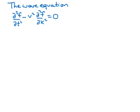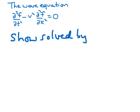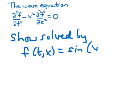The second partial differential equation we'll look at is the wave equation. We have a function f of two variables t and x, and we take the second derivative with respect to t and subtract v² times the second derivative with respect to x, setting that equal to zero. We want to show that this is solved by f(t, x) = sin(vt − x). We'll differentiate it twice with respect to t and subtract v² times the second derivative with respect to x.